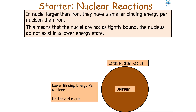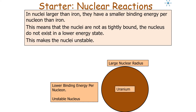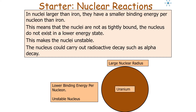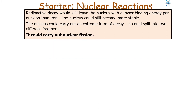In nuclei larger than iron, the binding energy per nucleon is smaller than iron's. This means the nuclei are not as tightly bound and do not exist in a lower energy state, making them unstable and liable to radioactive decay such as alpha decay. However, radioactive decay would still leave the nucleus with a lower binding energy per nucleon than iron, so the nucleus could still become more stable by carrying out an extreme form of decay — splitting into two fragments: nuclear fission.